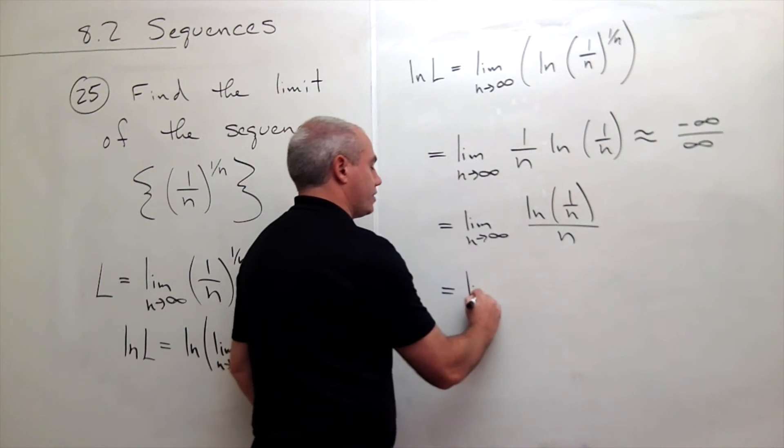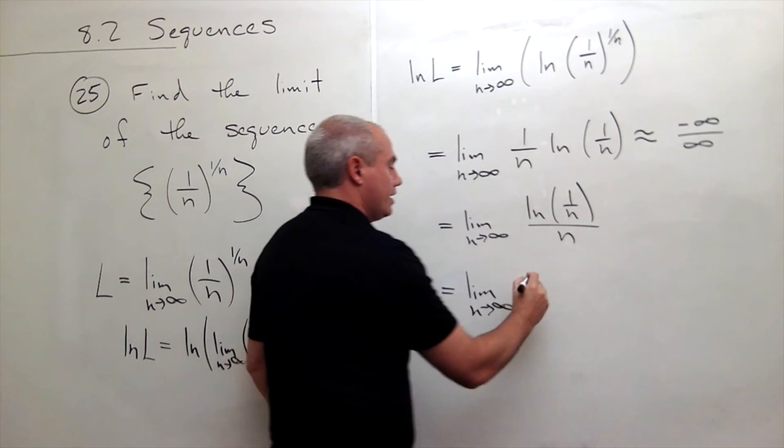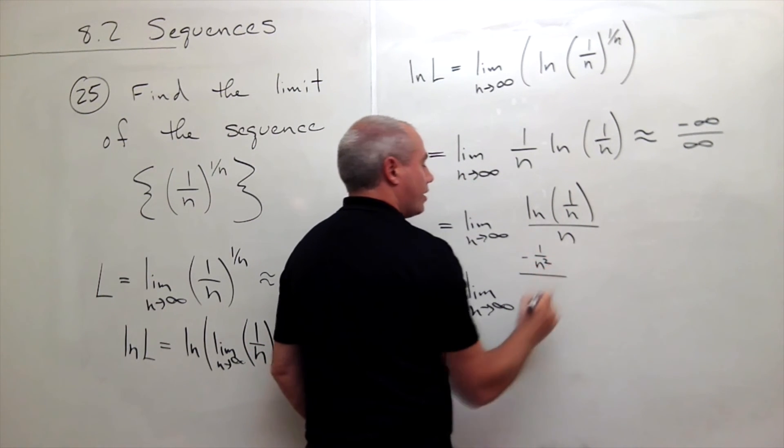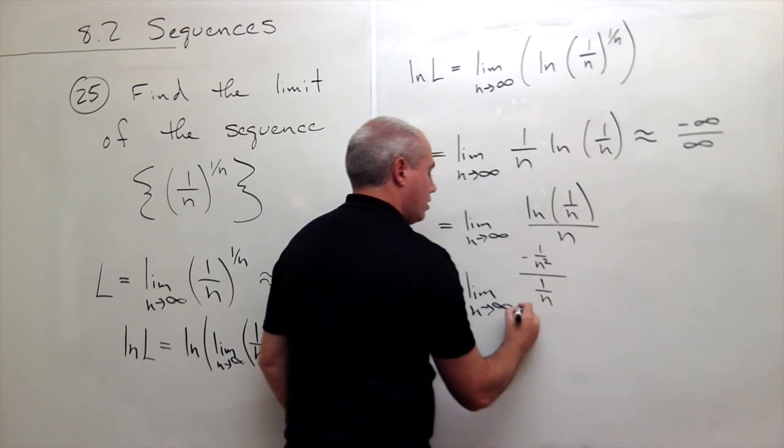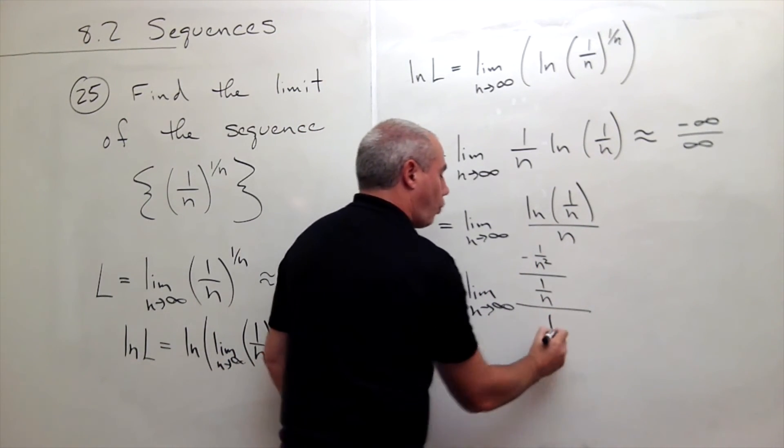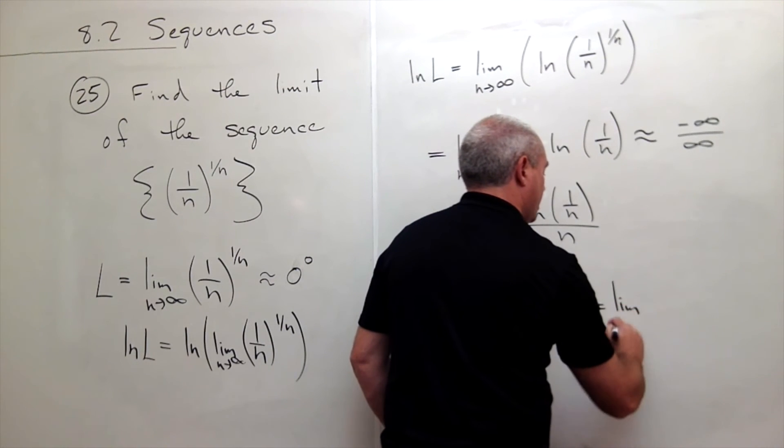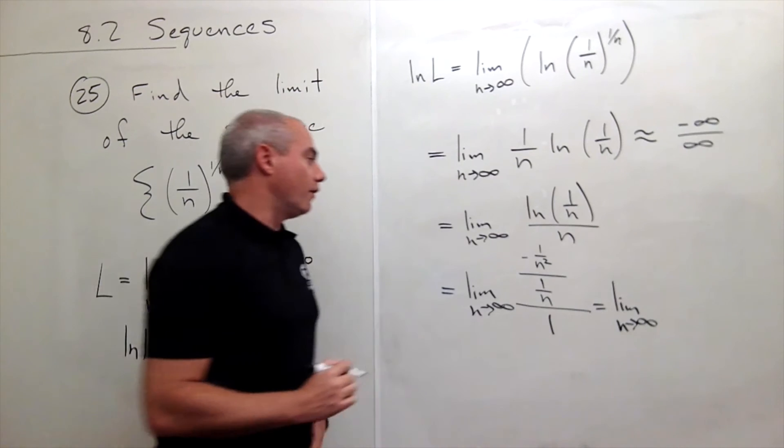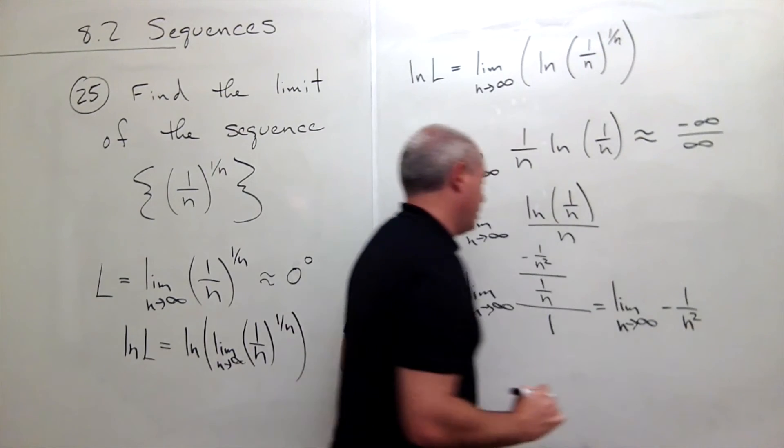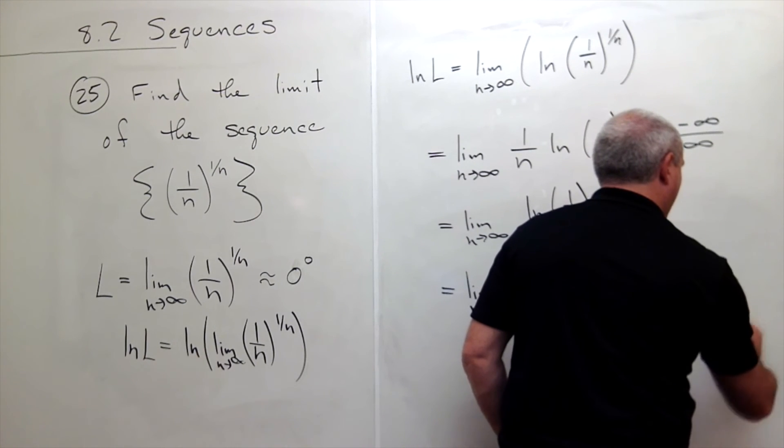I'll take the derivative of the top, take the derivative of the bottom. The derivative of ln of 1 over n is the derivative of 1 over n which is minus 1 over n squared divided by 1 over n. All of that is divided by the derivative of n. The derivative of n is just 1. So what we're left with here is the limit as n goes to infinity of negative 1 over n squared. And then I flip and multiply this 1 over n and I get times n over 1.